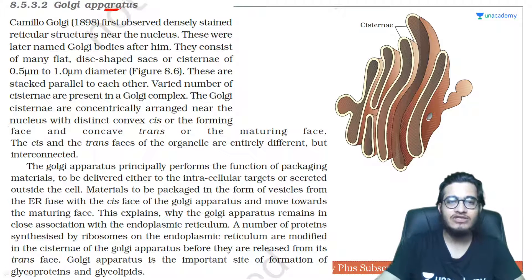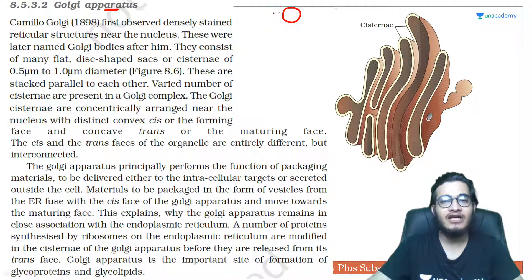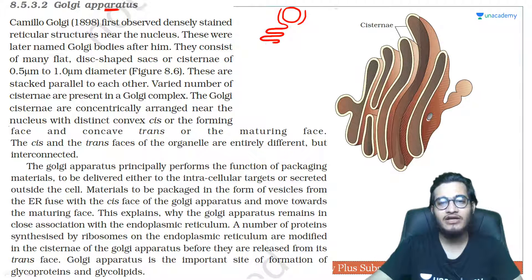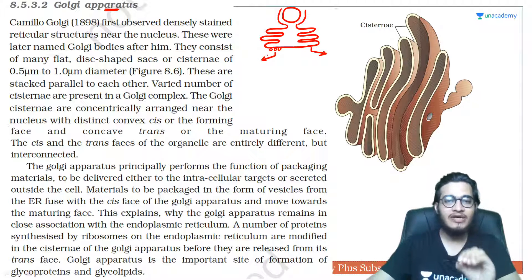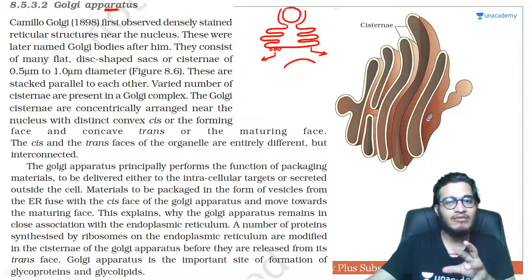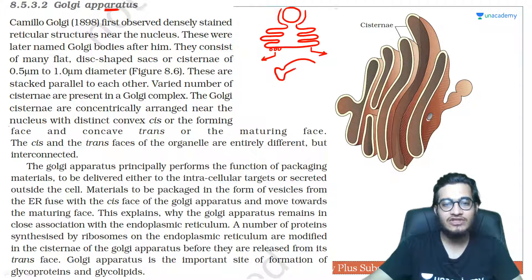Now let's talk about Golgi apparatus. Last video mein humne dekha that if this is the inner membrane of nucleus and this is the outer membrane of nucleus, toh yeh outer membrane of nucleus continuous hoti hai aapka endoplasmic reticulum ke saath. Endoplasmic reticulum pe ribosome present ho bhi sakte hain — toh ise bola jaega RER (rough endoplasmic reticulum), aur nahi honge toh SER (smooth endoplasmic reticulum). Ab is ER ke just paas, nucleus ke saath outer membrane se juda hua compartment hai ER, lekin uske just paas present hota hai Golgi complex.